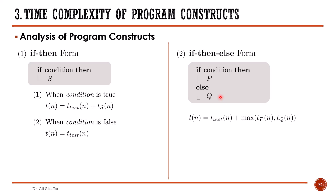When analyzing the algorithm, you don't know which statement will be executed — that depends on the result of the condition. Therefore, you need to find the time complexity of both statements P and Q, then select the maximum between them. As a result, T(n) is equal to the time for testing the condition plus the maximum time between executing both statements P and Q independently.